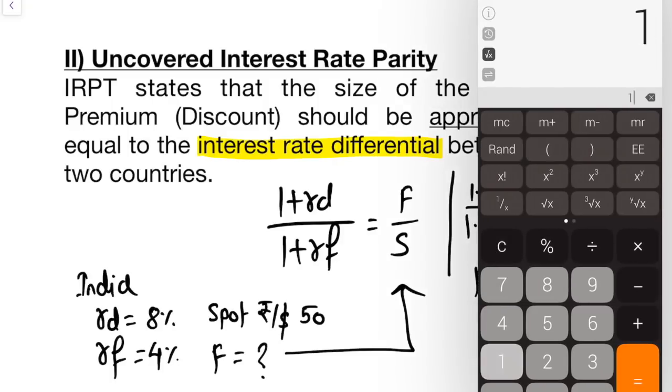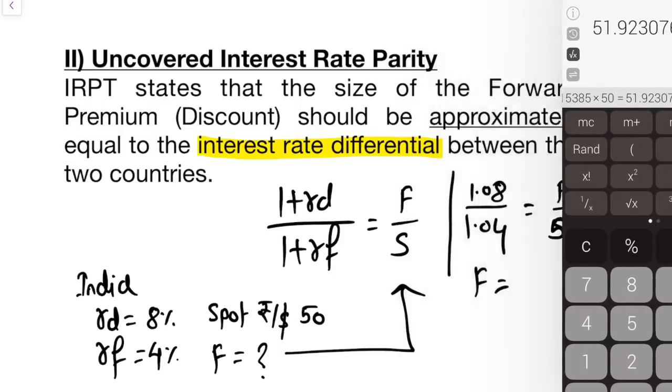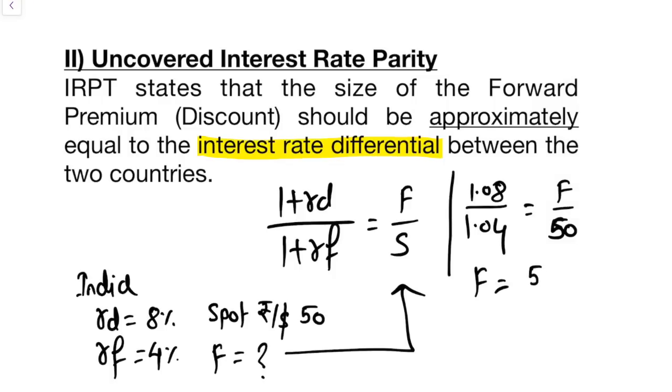1.08 divided by 1.04 into 50, this gives you the value of 51.92. So 51.92 is the forward rate in rupees per dollar.